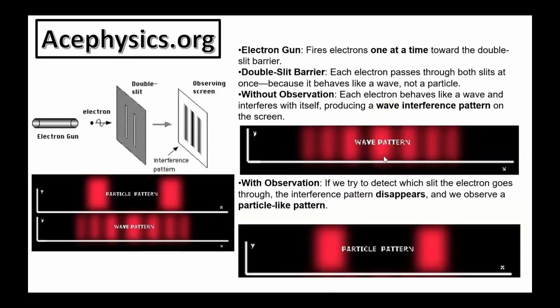The majority of the electrons would be detected in between the two slits, in the central maxima. Then there'd be a dark spot where no electrons would ever be detected. And then you have a bright spot where electrons would be detected and so on. This is the wave interference pattern. If we try to detect which slit the electron goes through, the interference pattern disappears and we observe a particle-like pattern.